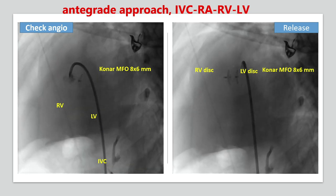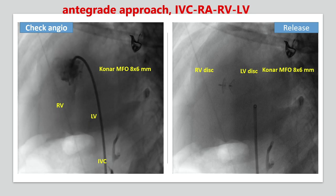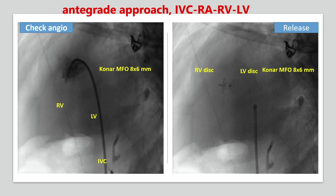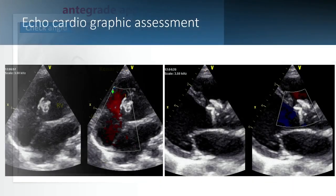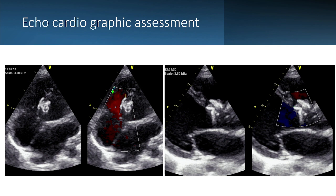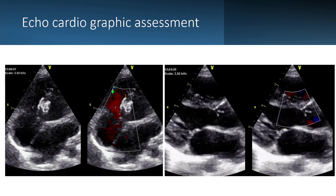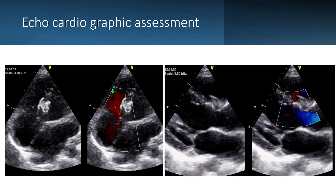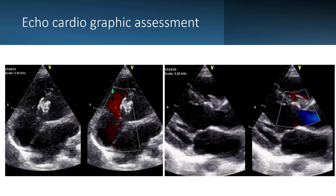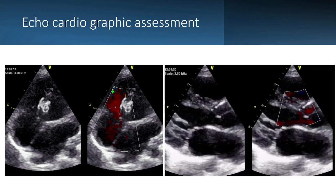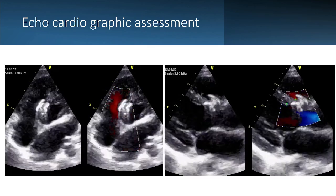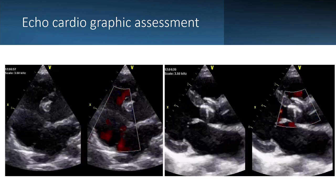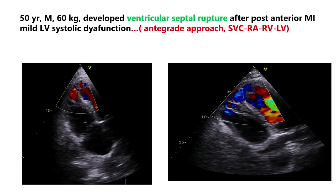Before deployment, we check the shape of the device, the size and placement of the device, any residual flow, and the distance from the aortic valve. Echo is very important — both before and after deploying, we confirm the device is well seated, there is no residual flow, no aortic regurgitation, and no progressive tricuspid regurgitation. When confirmed, we deploy the device and then follow up with echo.